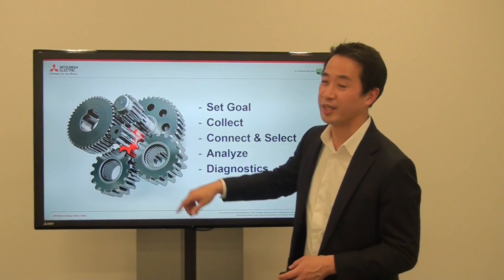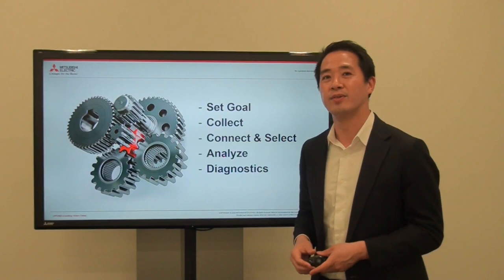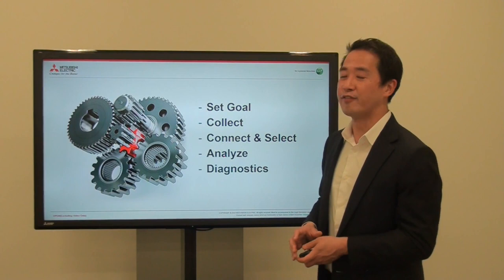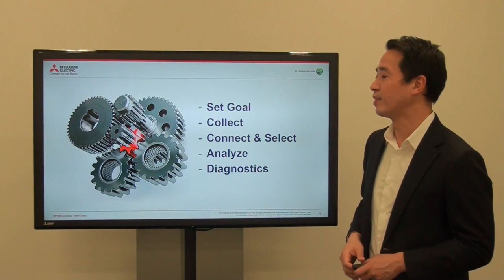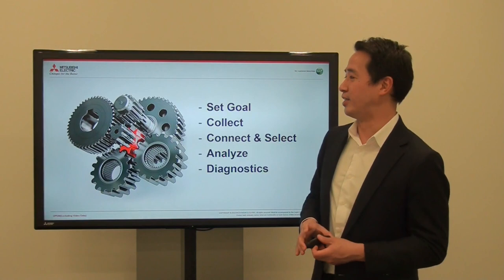This red gear sometimes wears down and then stops the machine. So we want to monitor this gear's wearing so we can find out when it's going to break down the machine. If we know up front, then we can stop it, do the maintenance, and have no problem with production. But actually, finding out when this red gear will wear is very difficult.